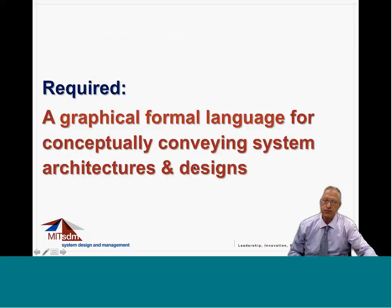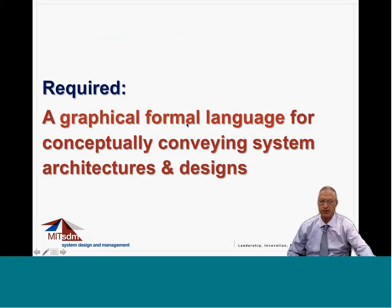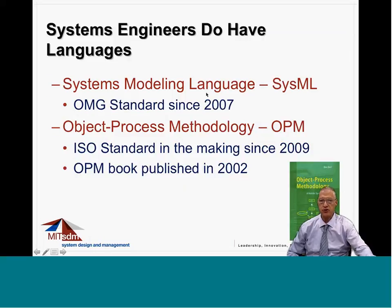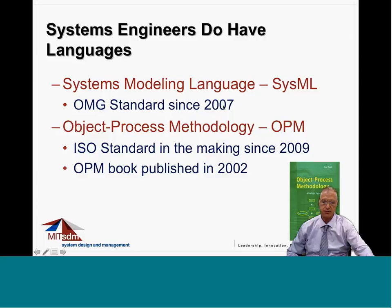What is required is a graphical, maybe also textual, formal language for conveying systems, architectures, and designs in a conceptual, straightforward, clear, and unambiguous way. Systems engineers do have a couple of languages. One is SysML, Systems Modeling Language, which has been the standard of OMG Object Management Group since 2007. There is also Object Process Methodology, OPM, which is in the process of becoming ISO standard since 2009, with a book published in 2002 and previous publications dating back to 1995.